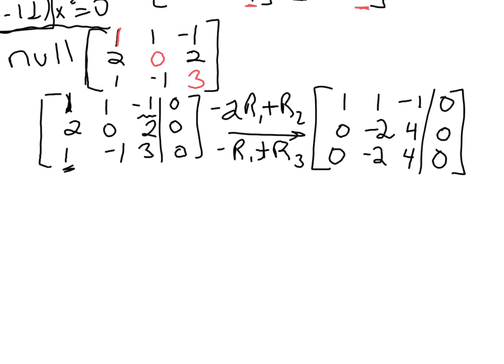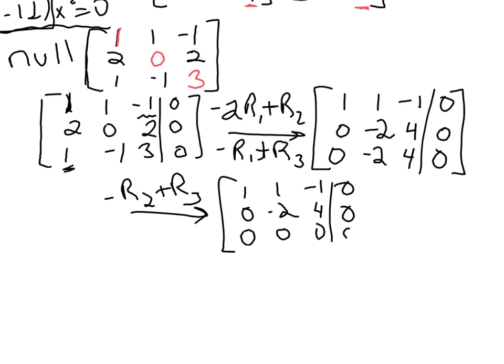And you've probably noticed at this point, when you get two rows that are exactly the same like that, on the next step, we can turn one of those rows to 0, and we should. So I'll do negative row 2 plus row 3 to 0 out that third row. So I have 0 plus 0, positive 2 plus negative 2, negative 4 plus 4, and 0 plus 0.